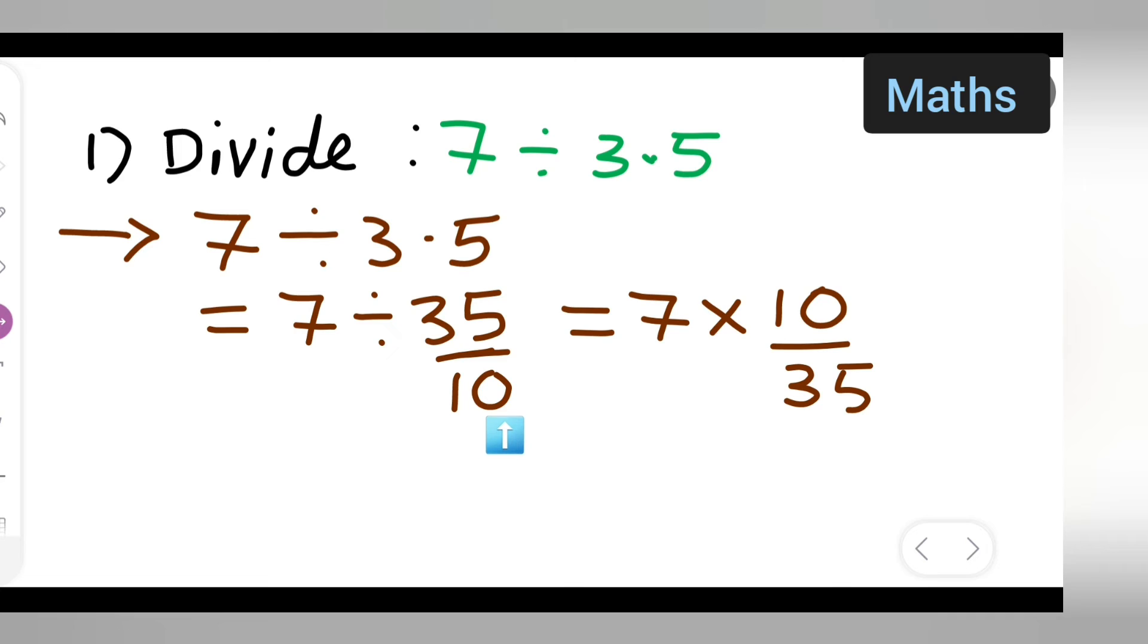Reciprocal of this, so it will be 10 upon 35. So basically what is going to get canceled? You have to cancel that. Directly you can cancel, right? 7 ones are 7, so you can cancel it. So 5 ones are 5, twos are 10. So what is the answer basically?